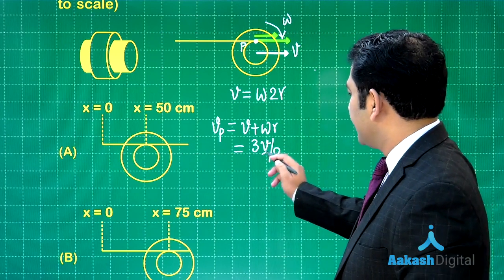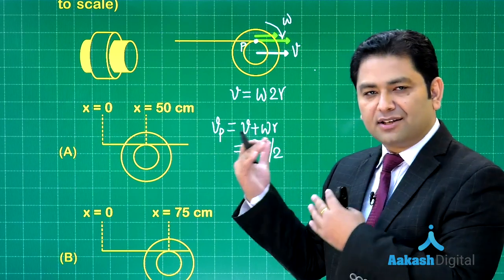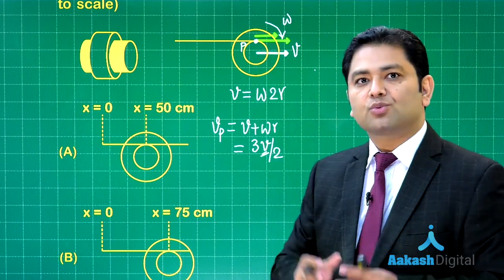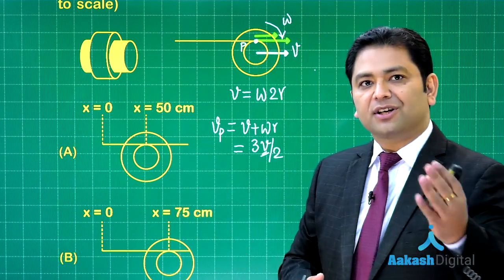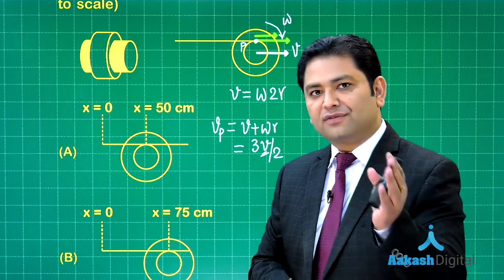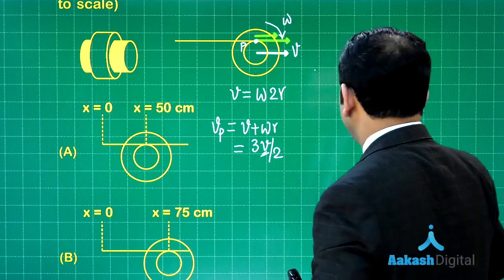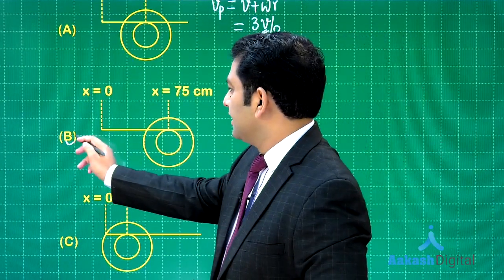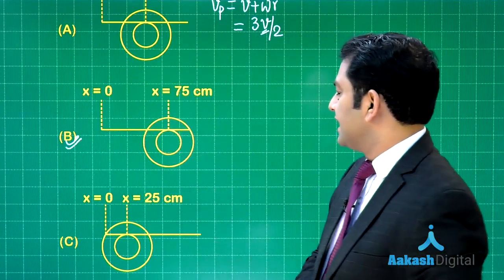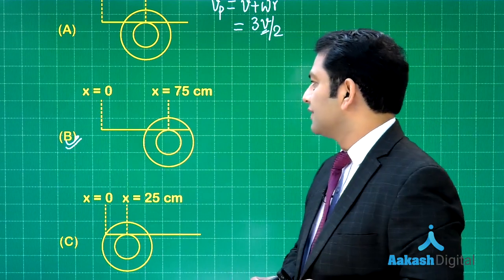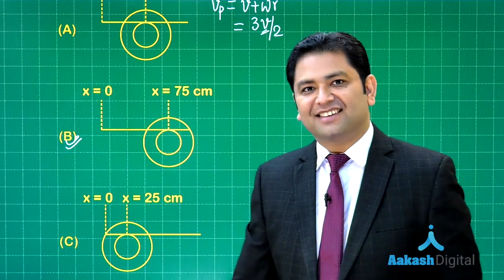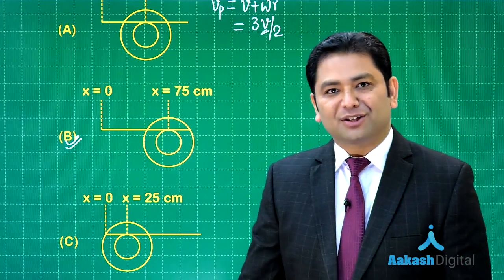By the time the center moves a distance 50 centimeter, the meter stick should move a distance 75 centimeter, because the velocity of the center is V, the velocity of this point is 1.5 times, so correspondingly the distance moved will also follow the same relationship. So where is the option? You could see it is here, option number B. The meter stick has moved a distance of 75 centimeter. That was interesting, isn't it? Let us go to further questions.